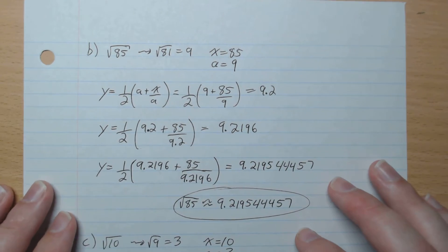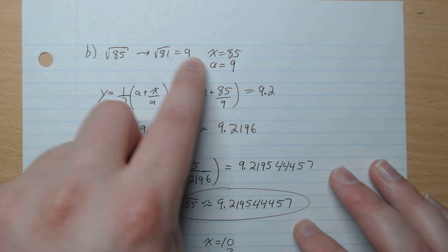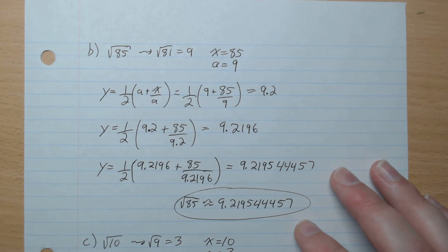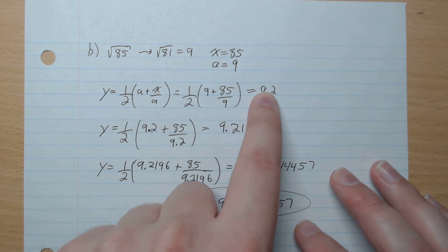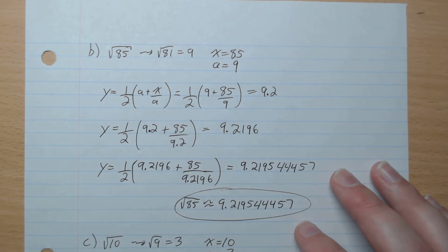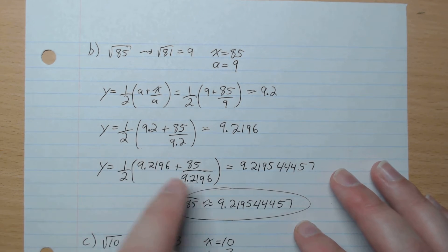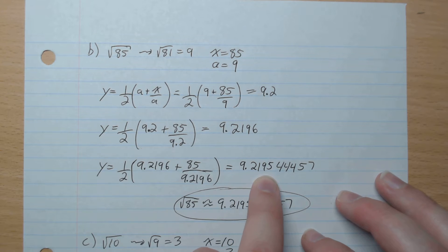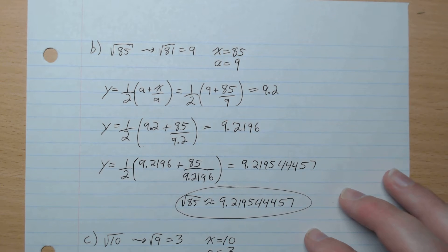B. Root 85. Closest is root 81. So a is 9, x is 85. We plug that in, we get 9.2. Plug in 9.2, and we get 9.2196444457.